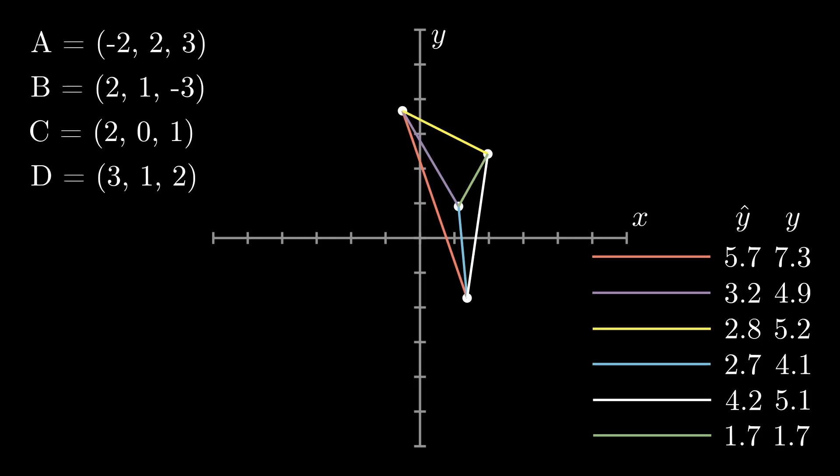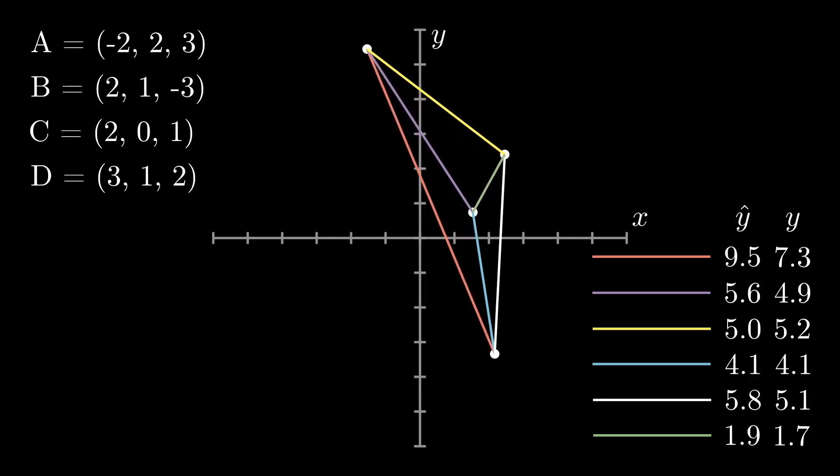Let's take a look at that in action, iteration by iteration. When I calculate the gradient for the first time, the movement looks like this. I found the mean squared error, found the gradient with respect to all the dots on screen, and moved those dots to reduce the mean squared error. As you can see, a couple of things have started to match up — the yellow line is 5 vs 5.2, the blue line is exactly 4.1 to 4.1, and green is 1.9 to 1.7 — but there's still a lot of error. Red is 9.5 versus 7.3, so we need more iterations.